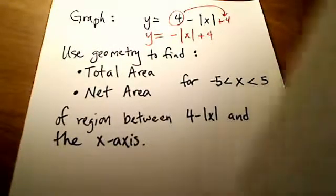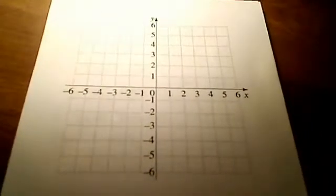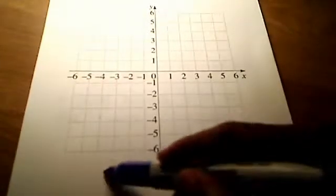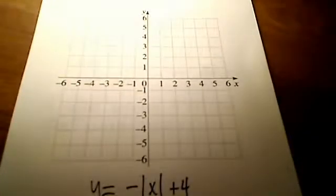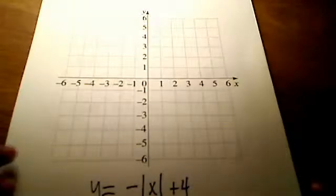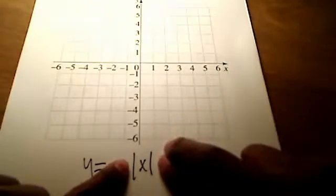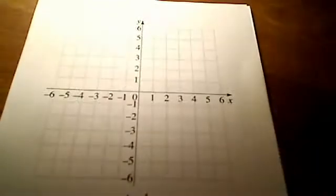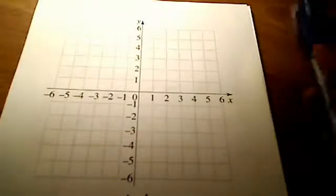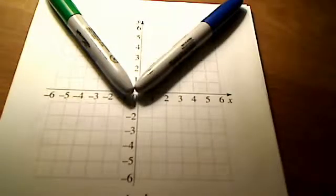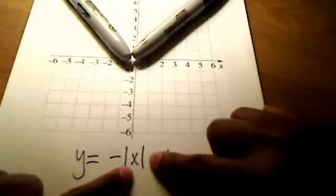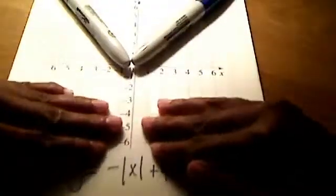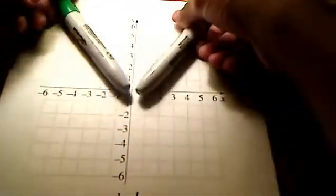Let's take a quick second to graph that equation. Our equation is y equals negative absolute value of x plus 4. If our equation was simply y equals the absolute value of x, you should know from pre-calculus that the absolute value of x is just a V-shape. A negative sign in front of that is just a reflection over the x-axis, so it makes it look more like an upside-down V.